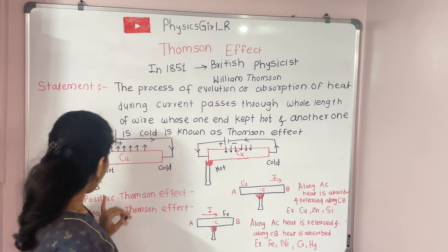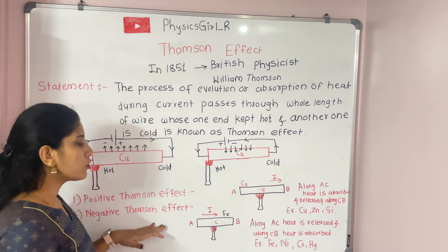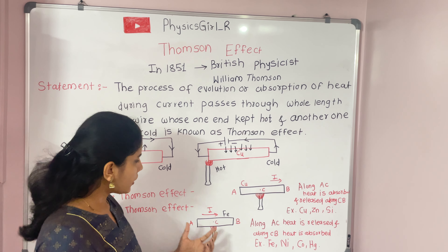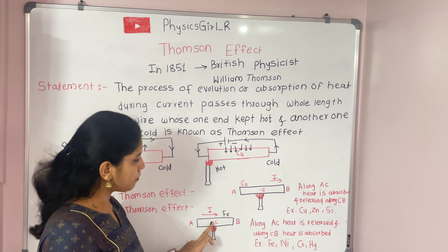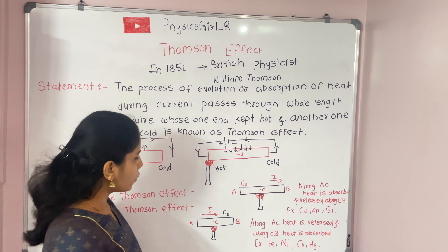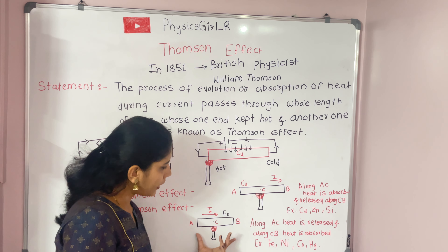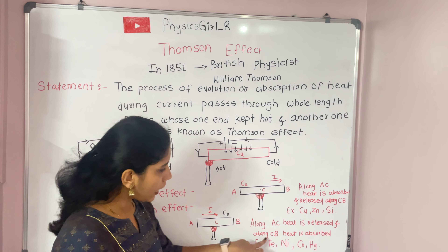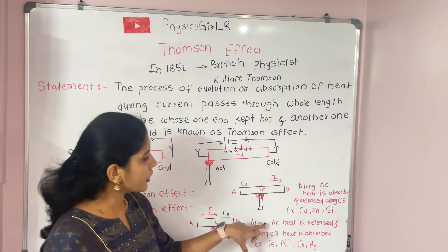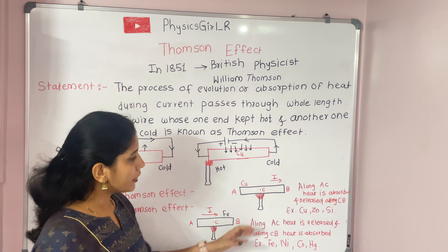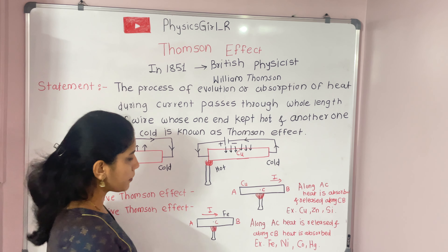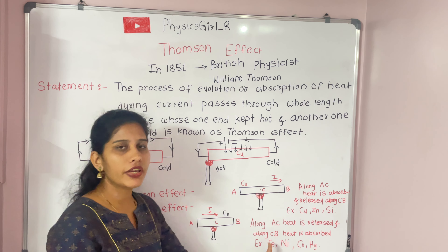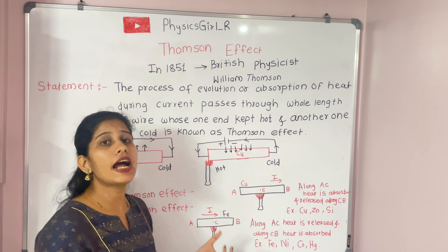The second is the negative Thomson effect. Consider an iron bar AB with its center at point C, again providing heat at C with a burner and flowing current along the length. In this case, there is absorption of heat along CB and evolution or release of heat along AC — exactly the opposite of the positive Thomson effect. Here the heat is transferred opposite to the direction of flow of current, which is why this is called the negative Thomson effect.